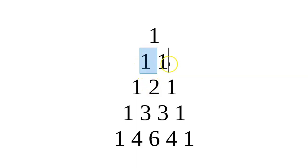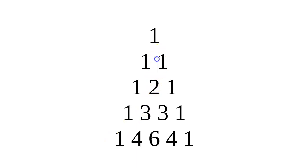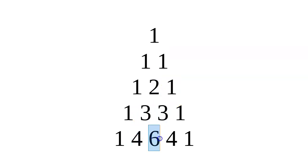We're going to write a program that looks at the number of lines we want and prints them out. We'll say the top row is row number one, and this first column including the ones going down is column one, the next is column two, then column three, and so on.